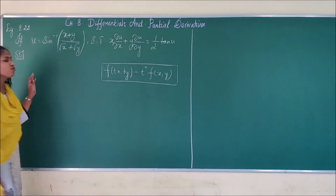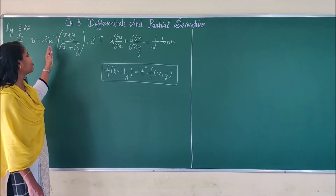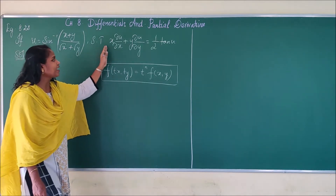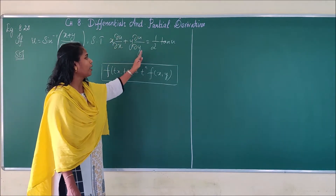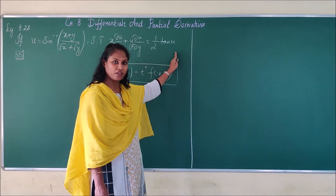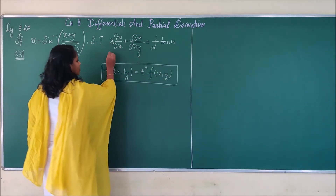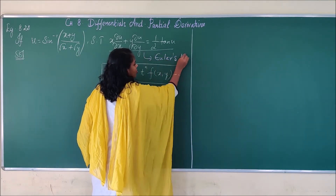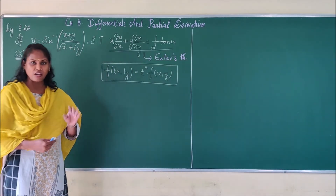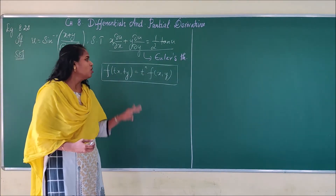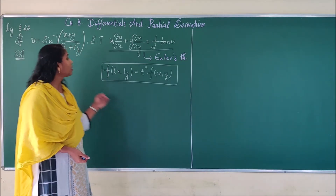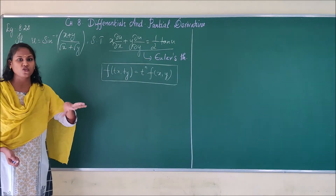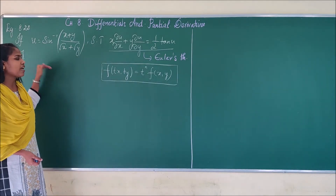So first, we have been given a problem. If u = sin⁻¹((x + y) / (√x + √y)), show that x ∂u/∂x + y ∂u/∂y = 1/2. This is what we call Euler's theorem. Euler's theorem exists when the function is homogeneous. So first, we have to check whether the given function u = sin⁻¹((x + y) / (√x + √y)) is homogeneous or not.